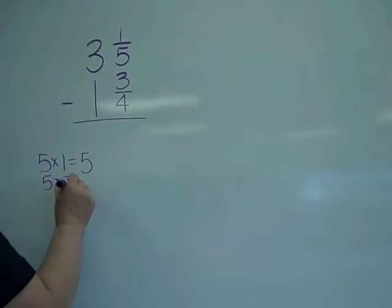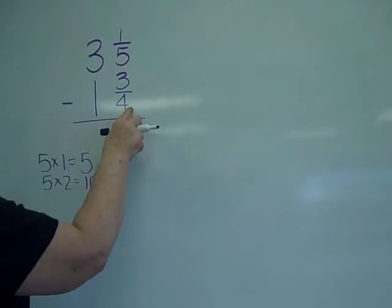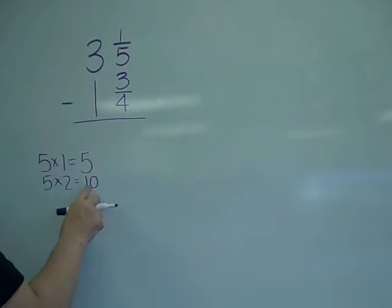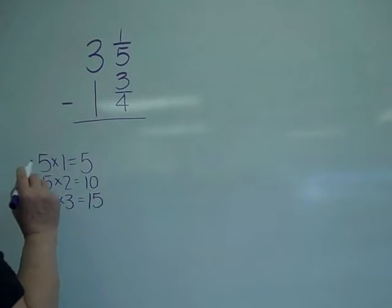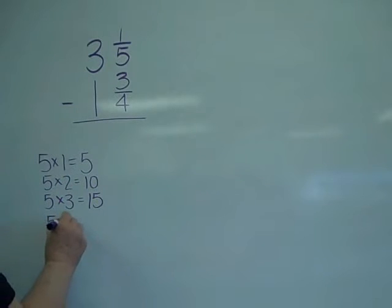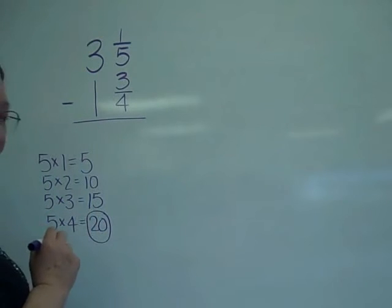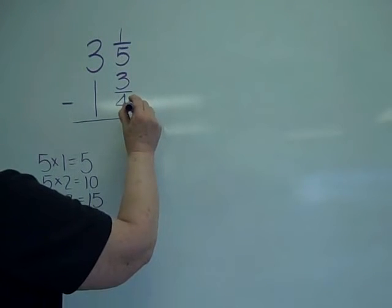Five times two is ten, but four does not go into ten, which means I keep going again. Five times three is fifteen, four doesn't go into fifteen, so now I'm going to try five times four is twenty. Oh, and that's the least common denominator. So at this point...